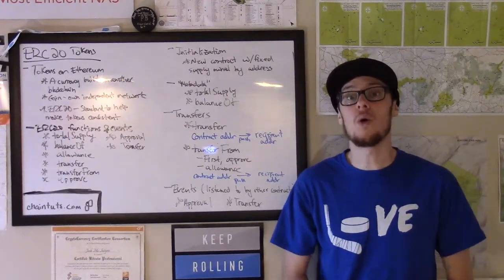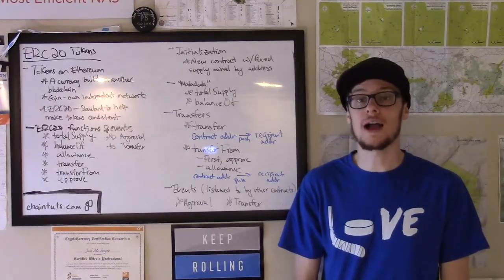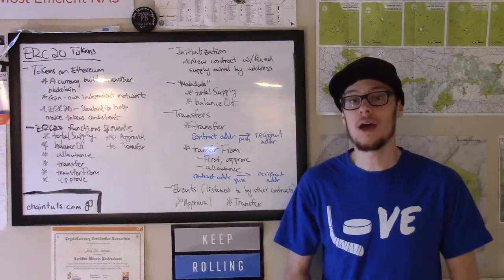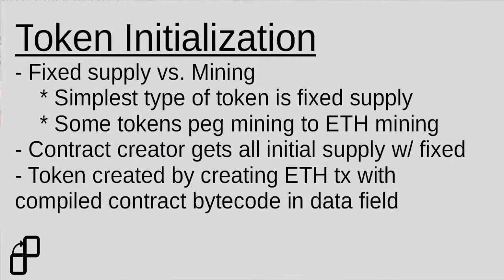So when a new token contract is added to the network, the token creator creates a smart contract transaction, and they are given all of the fixed supply to start with.